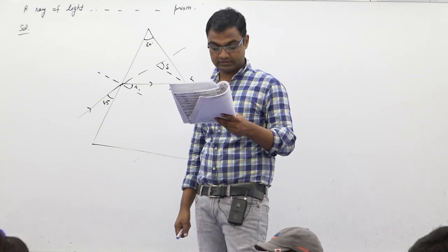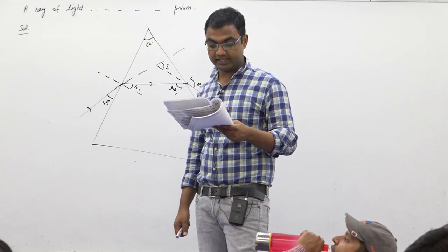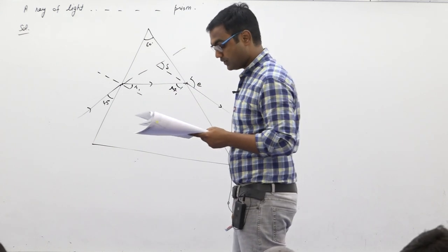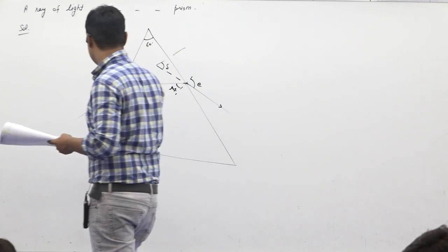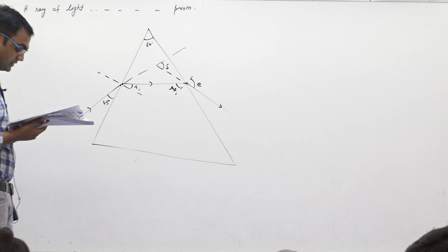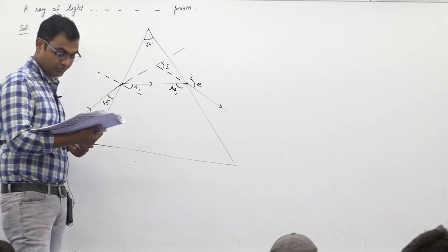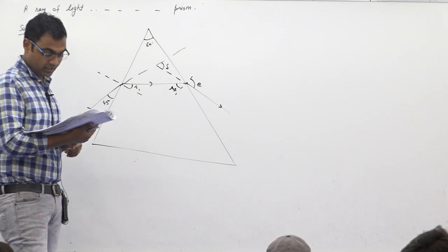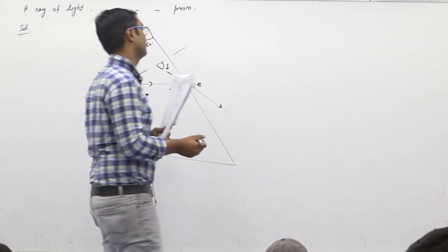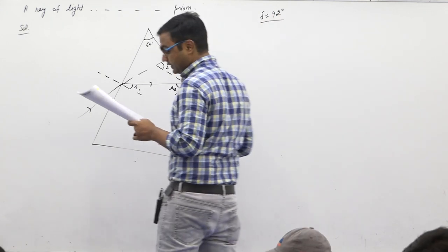A ray of light is incident on a prism at an angle of 50 degrees. The angle of the prism is 60 degrees, and the ray deviates through an angle of 42 degrees.